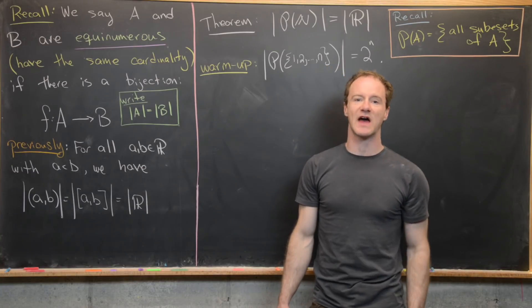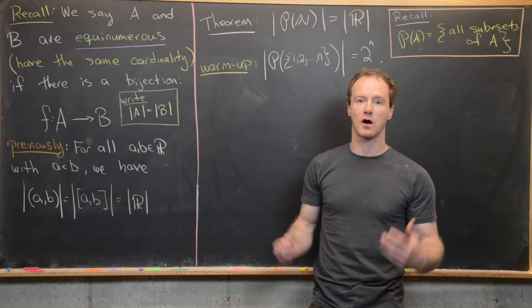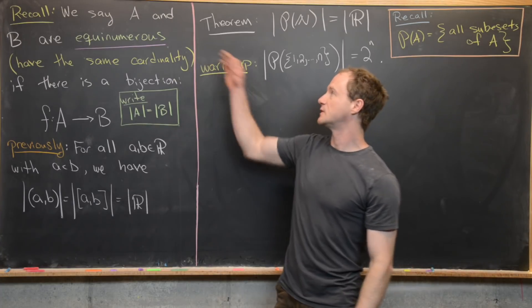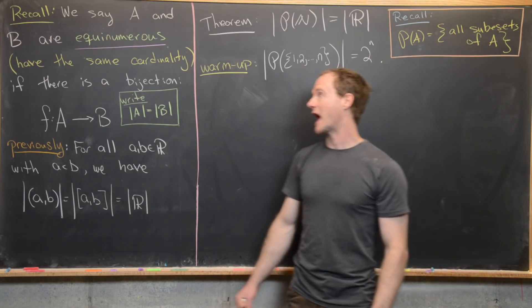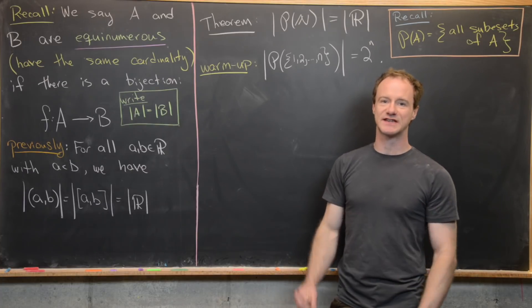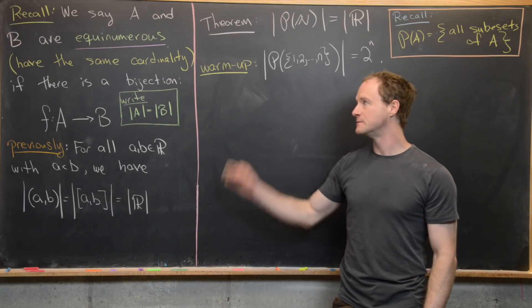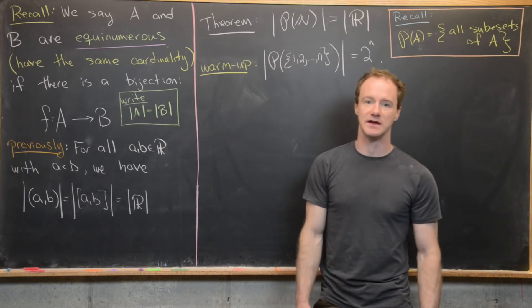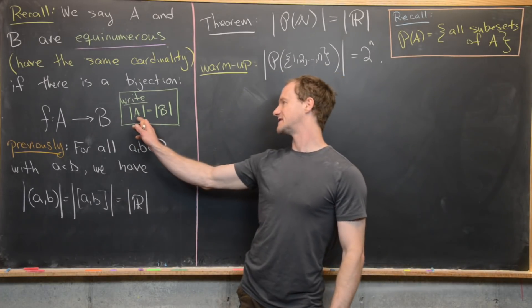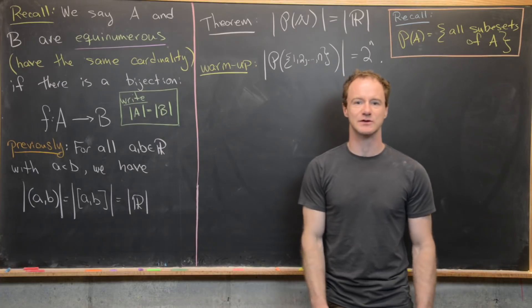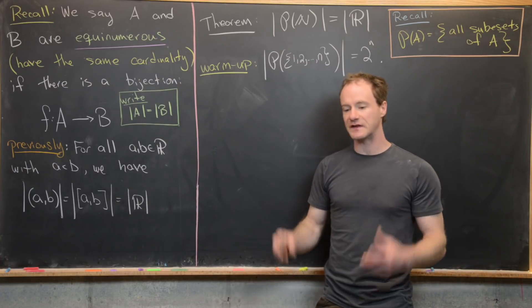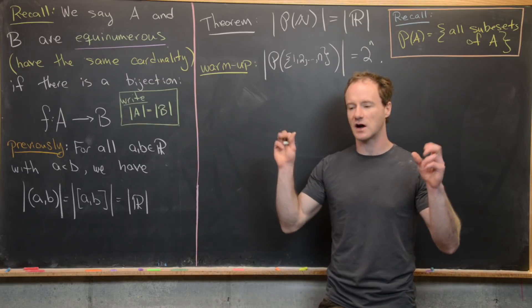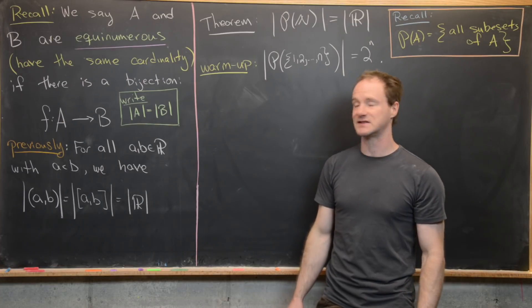Here we're going to revisit the notions of equinumerosity and equal cardinality of sets. Let's recall the definitions: we say that A and B are equinumerous — in other words, they are sets with the same cardinality — if there exists a bijection F from A to B. We often write this as |A| = |B|, noting that the absolute value of a set refers to the cardinality of that set.